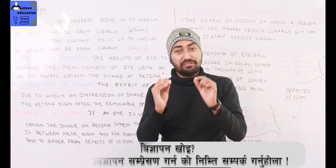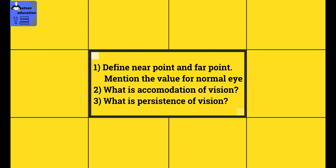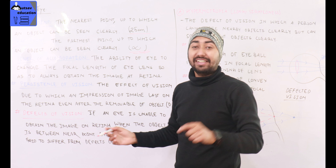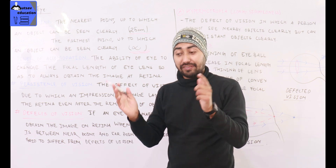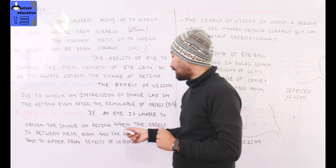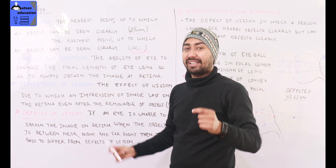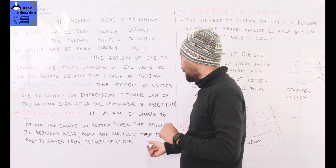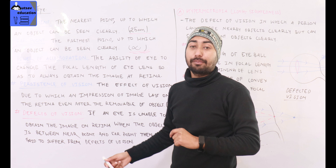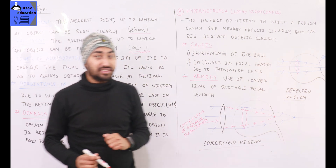Now, if the eye is unable to obtain the image on the retina — when the object is between the near point and the far point — it is said to suffer from defects of vision. There are two defects of vision we will study.